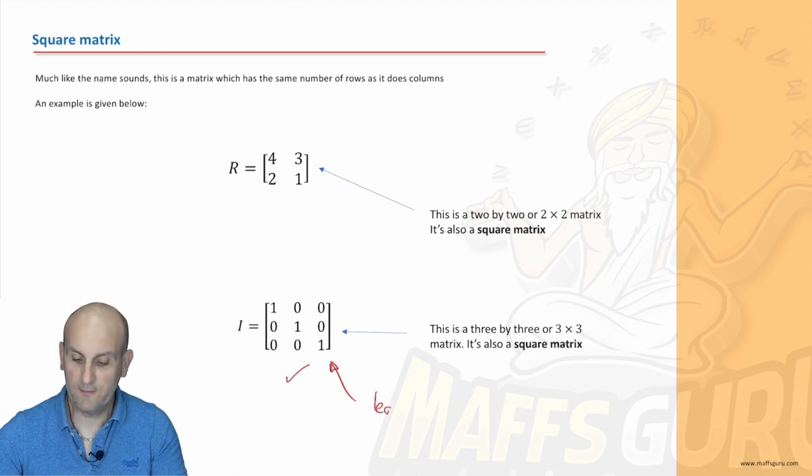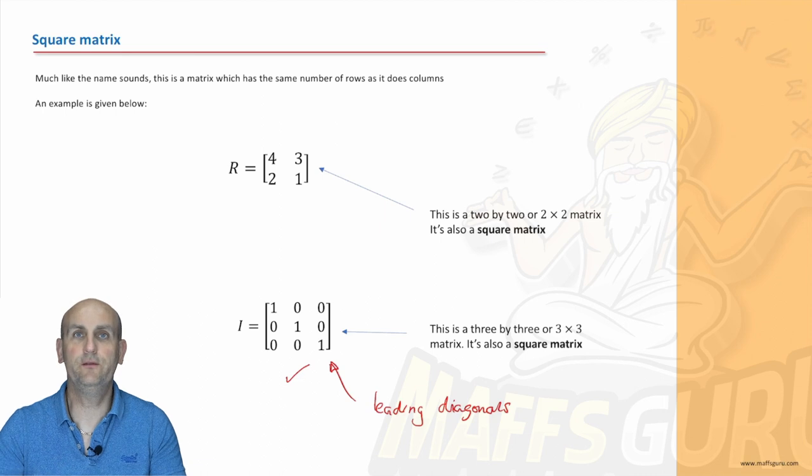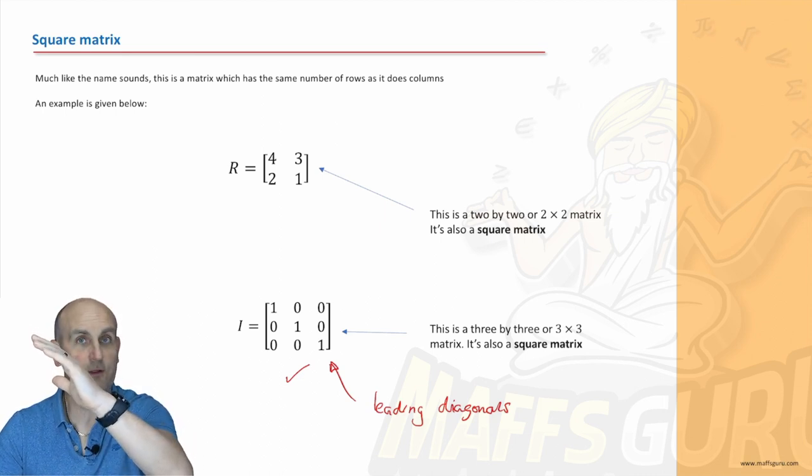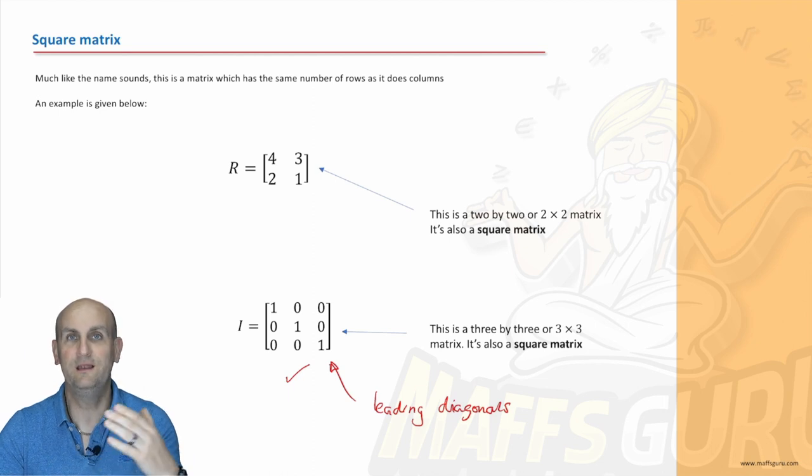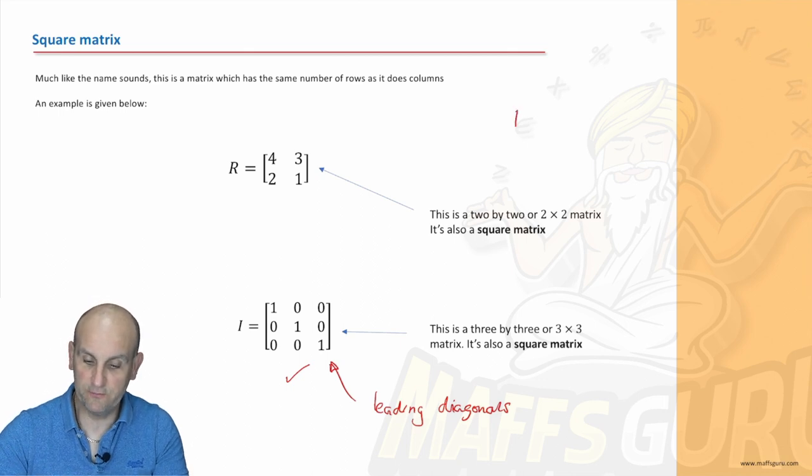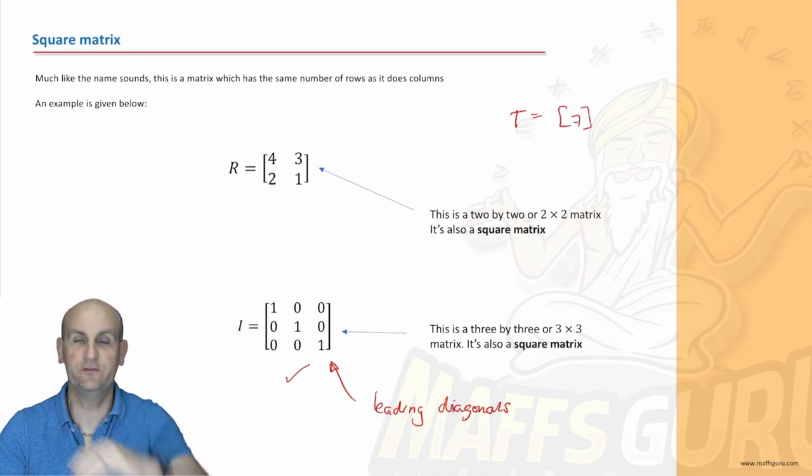One thing you do need to know that I haven't put down in any of these slides is those numbers are called my leading diagonals. Now, not just the ones. Any numbers that go that way through the matrix, and I hope I've got this right way around for the video, are the leading diagonals. All right, that's going to come up a little bit later in the question, but a square matrix. So, I suppose T is equal to [7]. Is that a square matrix? Yes, because it's a one by one. And we could go on forever.